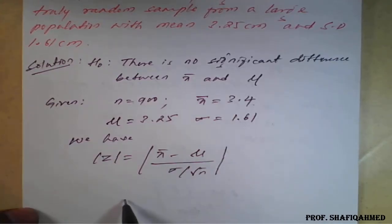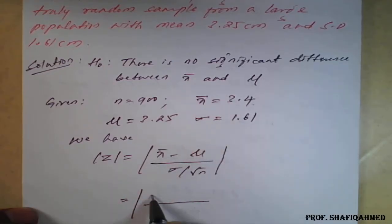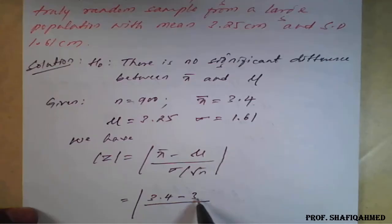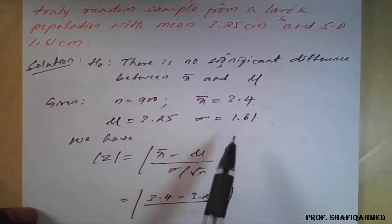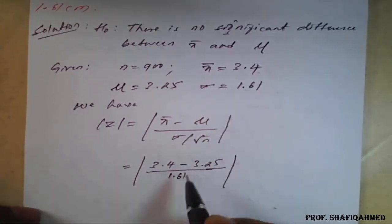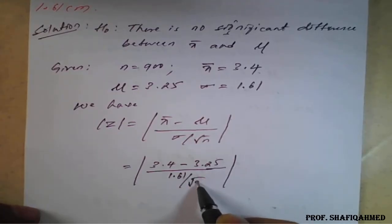Substitute the values here: X̄ is 3.4 minus μ is 3.25 divided by σ, the standard deviation 1.61 divided by square root of 900.